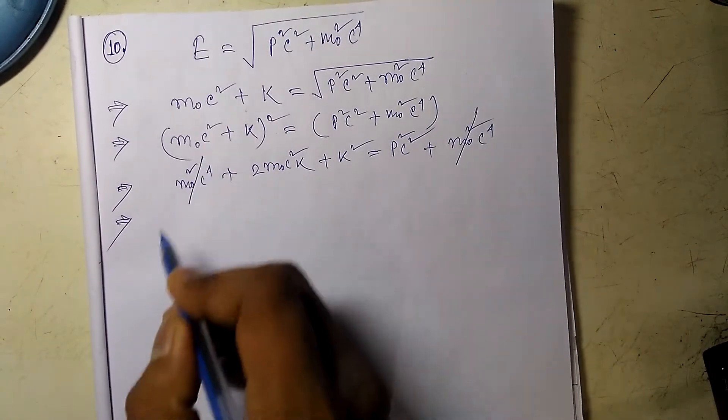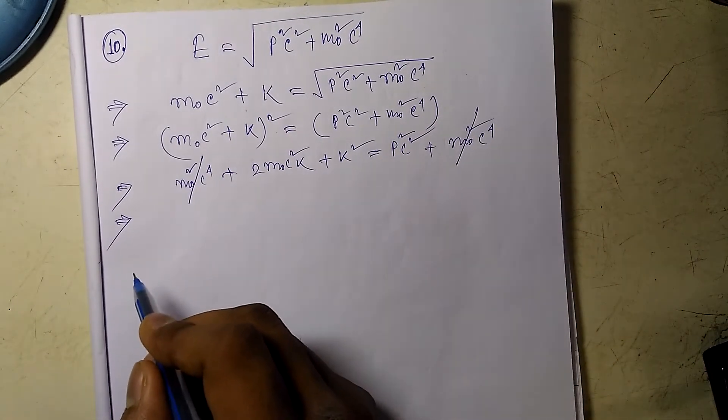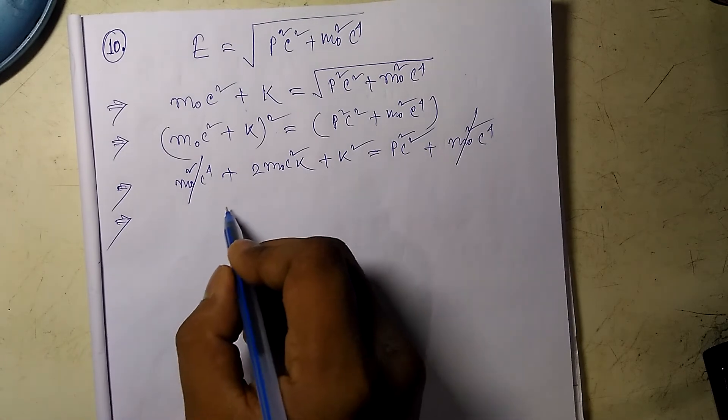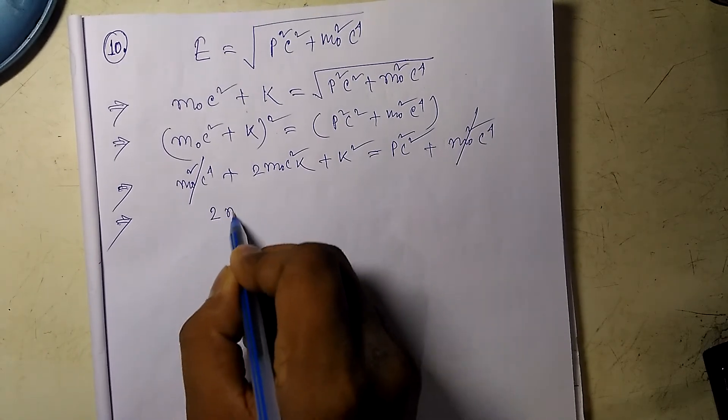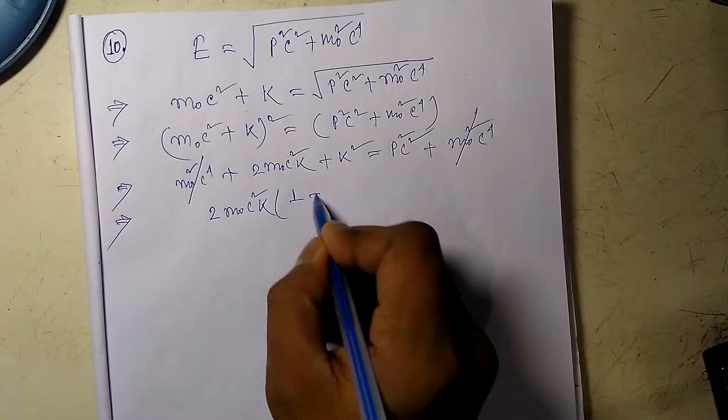So the m₀²c⁴ terms cancel out from both sides, and we are left with, taking 2m₀c²K common, it would be 1 plus...